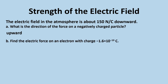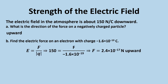Part B: find the electric force on an electron with a charge of −1.6 × 10⁻¹⁹ coulombs. Using E = F/Q, we substitute E = 150 and Q = −1.6 × 10⁻¹⁹ C, then solve for F. We get F = 2.4 × 10⁻¹⁷ newtons, directed upward.